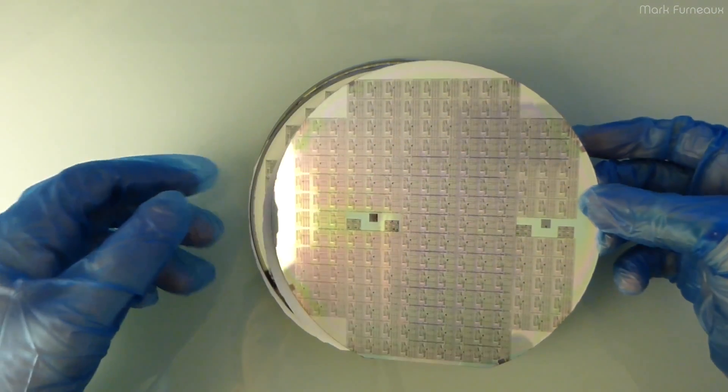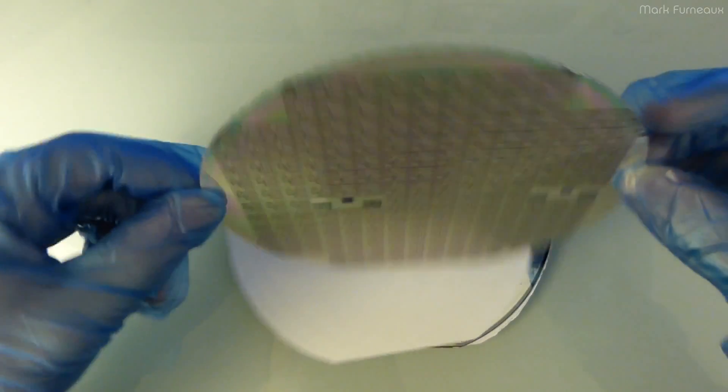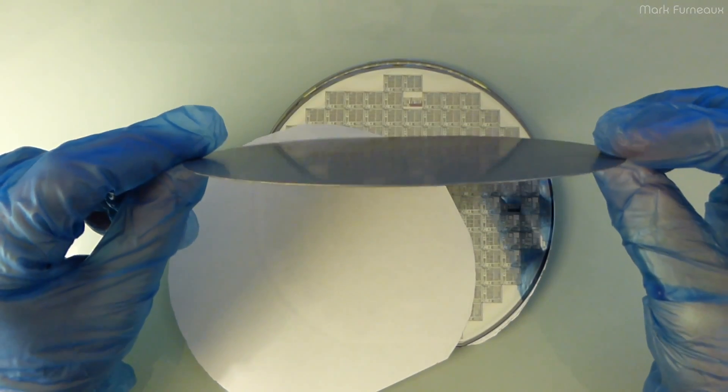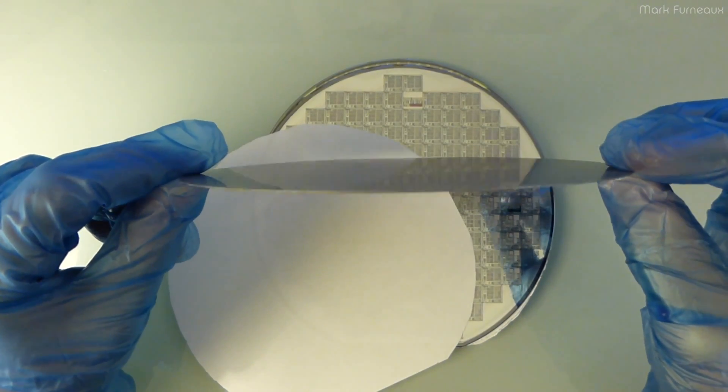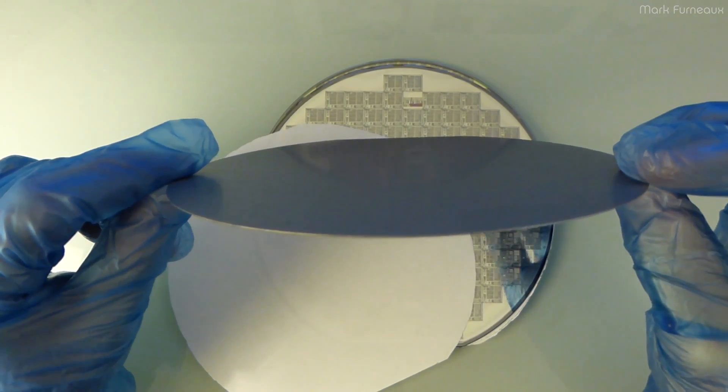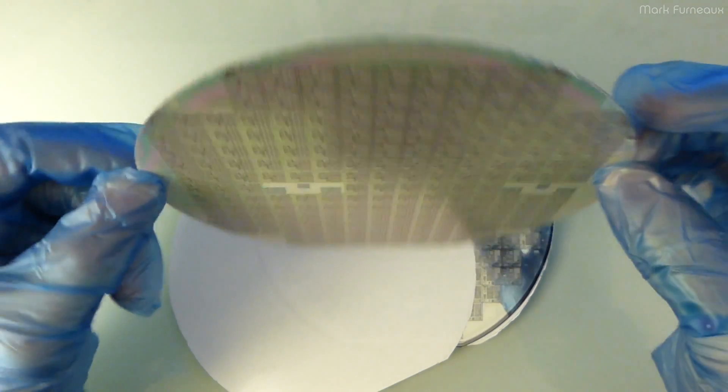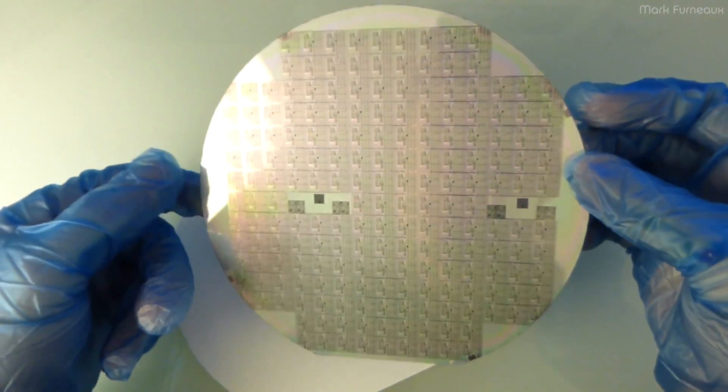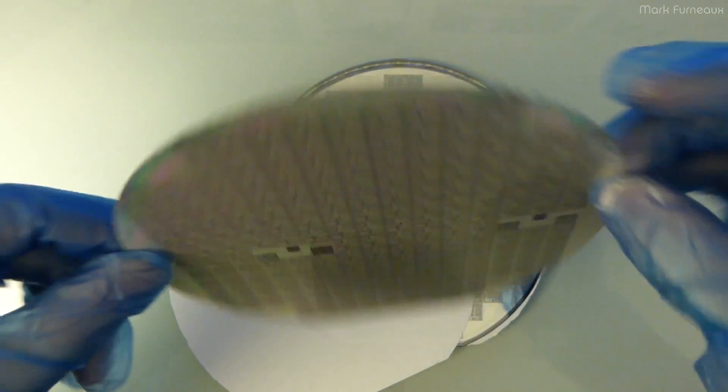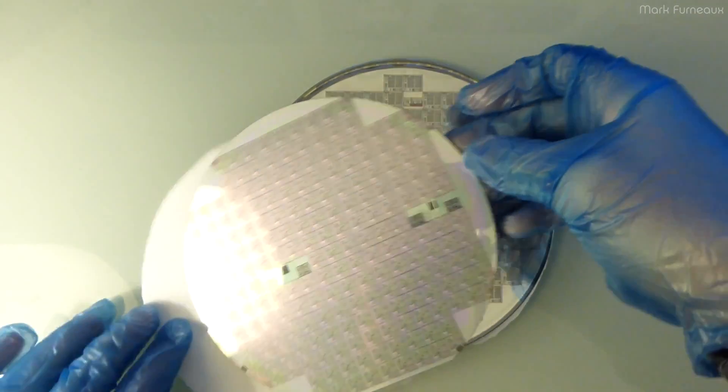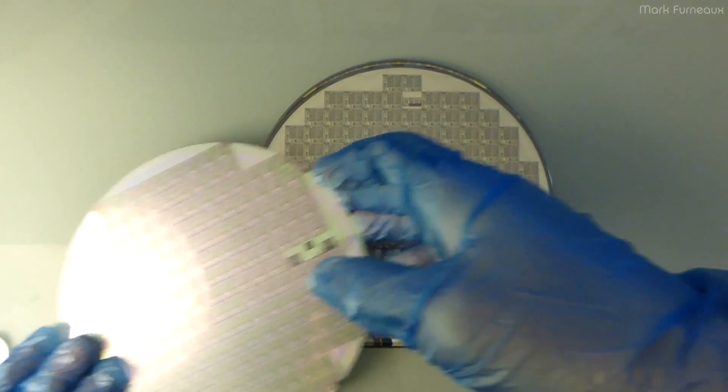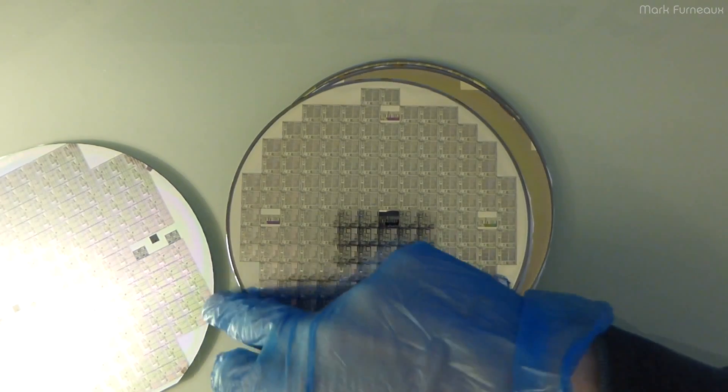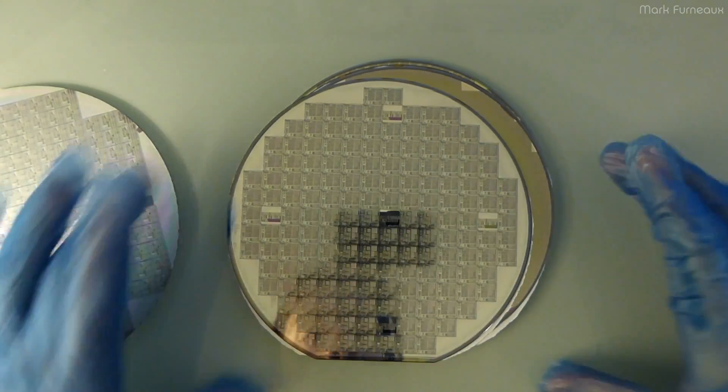The first thing that strikes me is how thin they are. I was actually not expecting them to be that thin. I was expecting them to be about double the thickness. I've just never held a wafer before. I've only seen pictures so that's the first thing that strikes me. Of course there's nothing on the back. Cracking one of these now would be pretty bad.